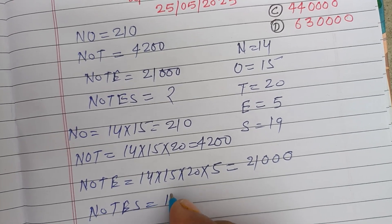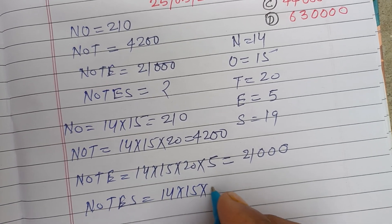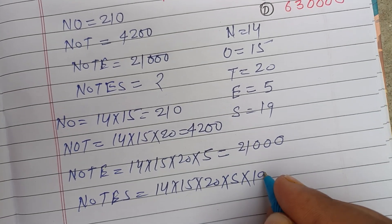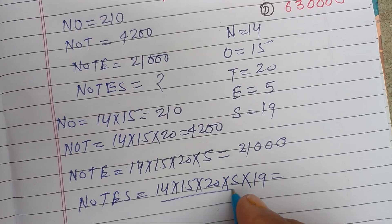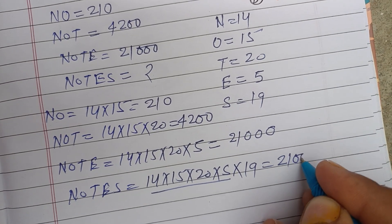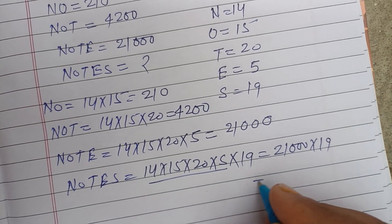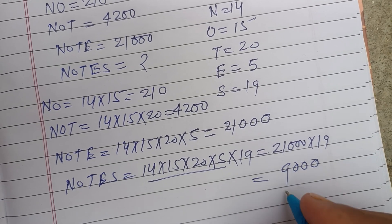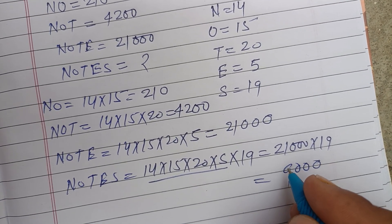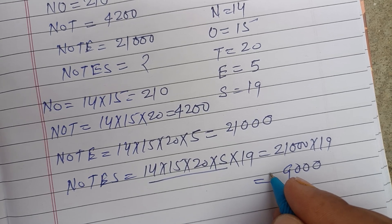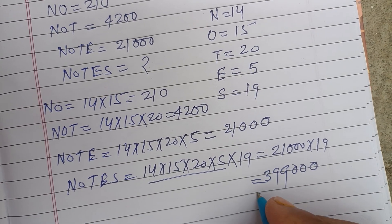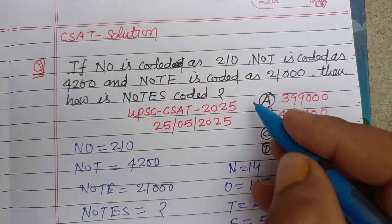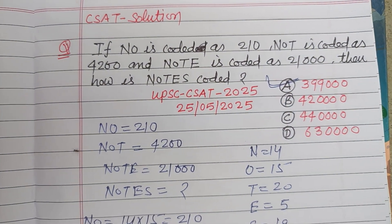Now for NOTES: 14 × 15 × 20 × 5 × 19 = 21000 × 19. Calculating: 21000 × 19 = 399000. So 399000 is the correct answer, which is found in option A. Option A is correct.